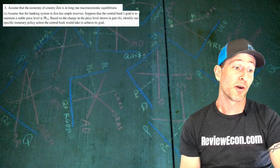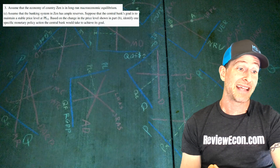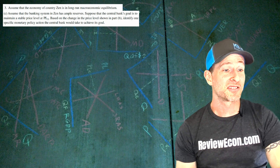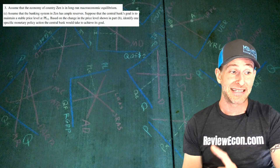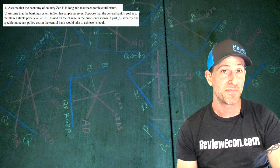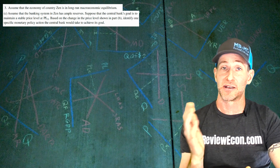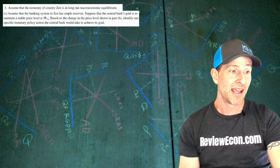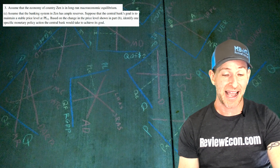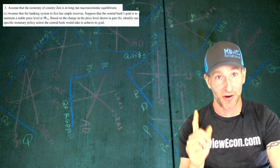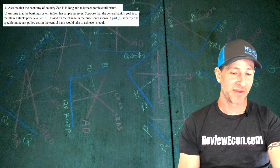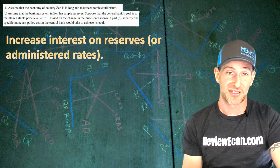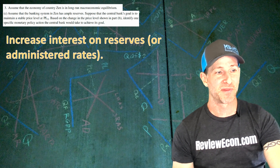Part C: assuming the banking system in ZEN has ample reserves and the central bank's goal is to maintain a stable price level at PL1, we need to reverse the price level increase. The monetary policy action the central bank can take is an increase in interest on reserves, or administered rates — either should be acceptable.